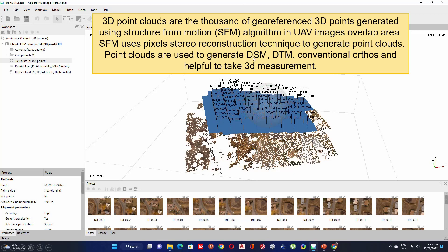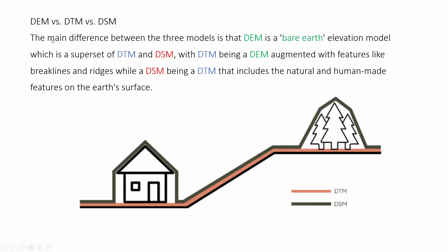The main difference between DSM, DTM, and DEM is that the bare earth elevation model is a superset of DTM and DSM. The DTM is a DEM augmented with features like breaklines and ridges, while the DSM is a DTM that includes natural and human-made features on the earth's surface. These two profiles show the difference between DTM and DSM — the DTM does not include human-made features.